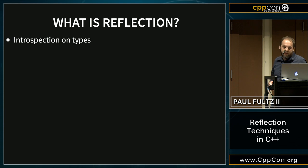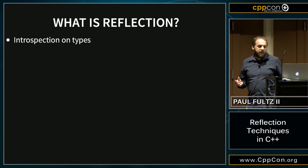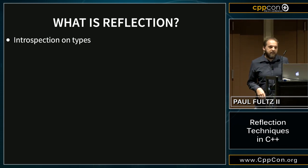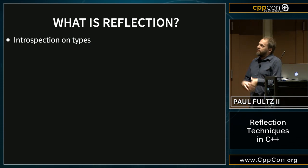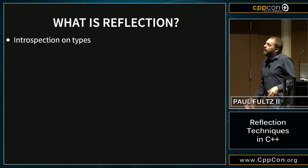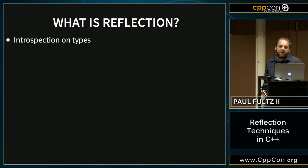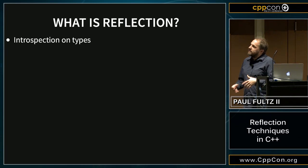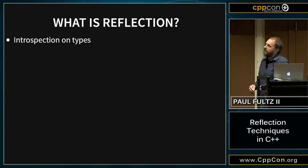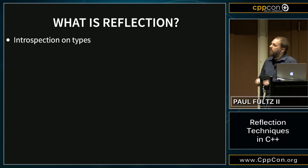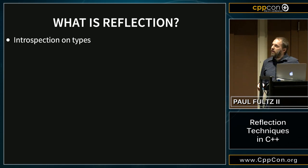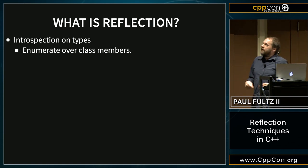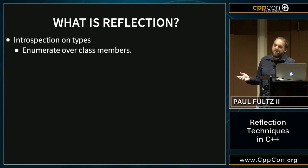Perhaps for people who are not fully aware of what reflection does: reflection essentially is introspection on types. You could go even as far as introspection on not just the types, but even the AST. You could go over classes, functions, and namespaces. But in general, when most people talk about reflection, they're usually talking about reflection on class types — finding out what kind of members are available, and enumerating over class members.